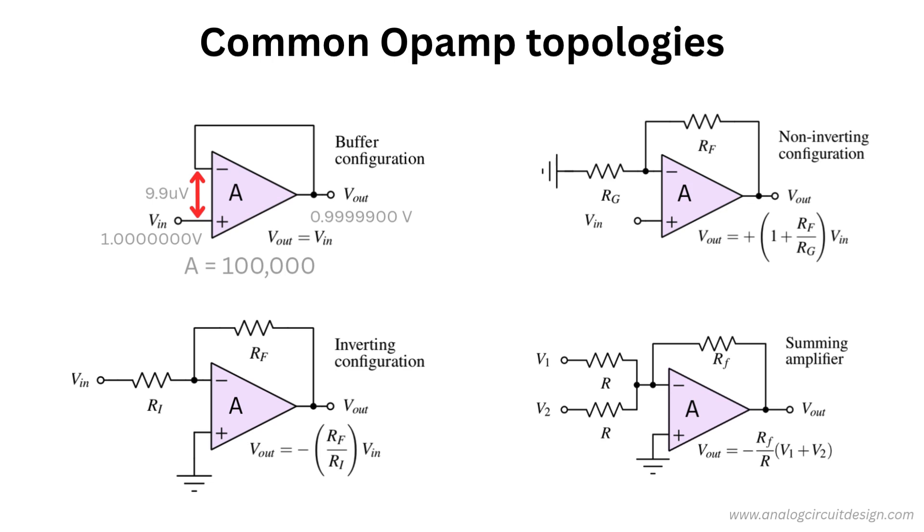The name operational amplifier comes from its original use before the digital era, where it performed mathematical operations like addition, subtraction, integration, and differentiation in analog computers.